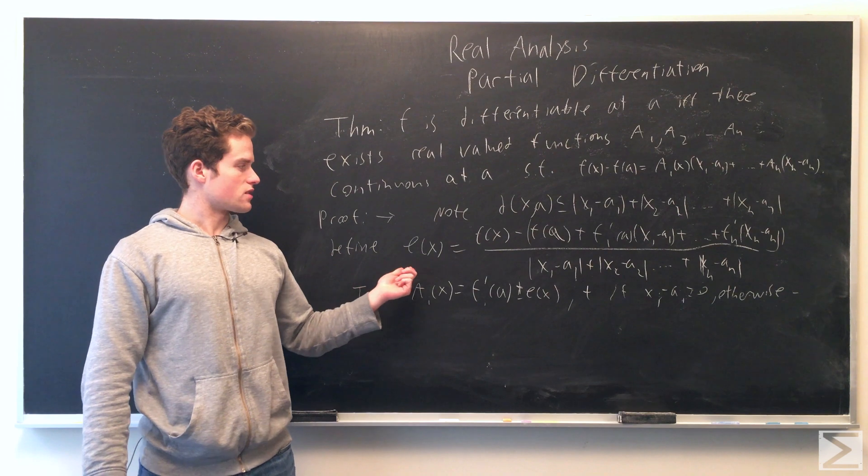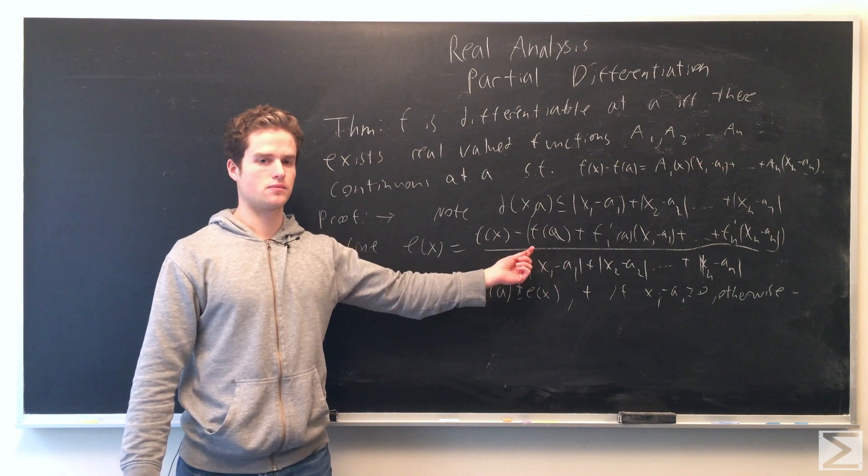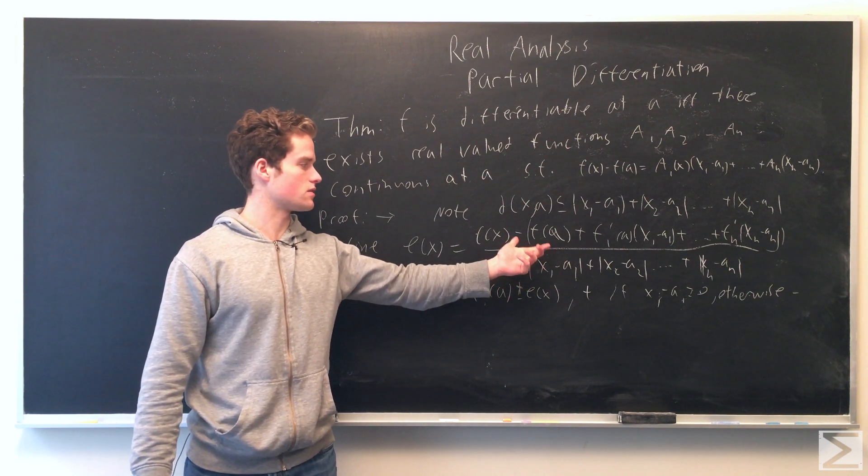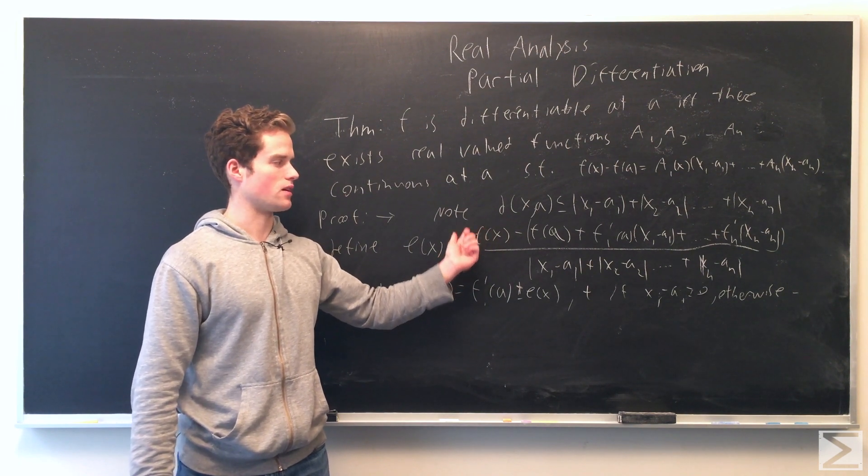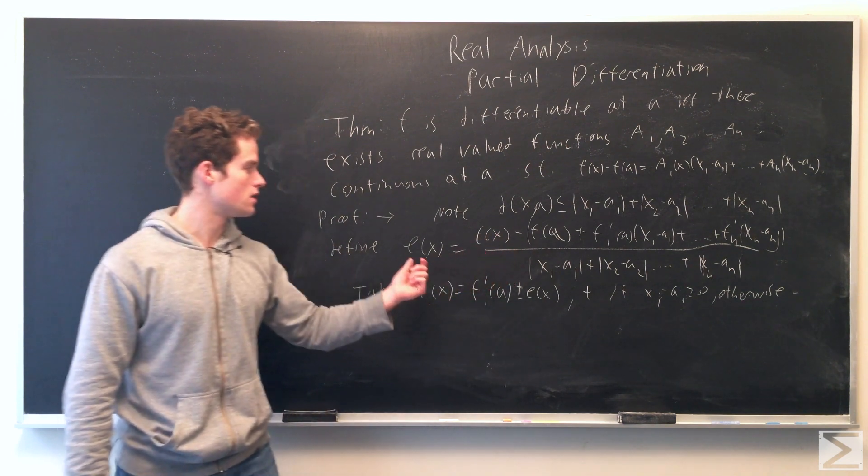Note that as x approaches a, since this denominator is bigger than d(x,a), we can factor this out and multiply by d(x,a) over d(x,a). We'll see this expression approaches 0 as x approaches a.